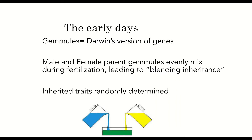According to paleontologist Niles Eldridge, Darwin didn't know anything about why organisms resemble their parents or the basis of heritable variations. He hypothesized that tiny particles called gemules that accumulated in sex organs transferred a blend of mating pairs' genes to their offspring. This idea was part of a larger, inaccurate theory of blending inheritance.